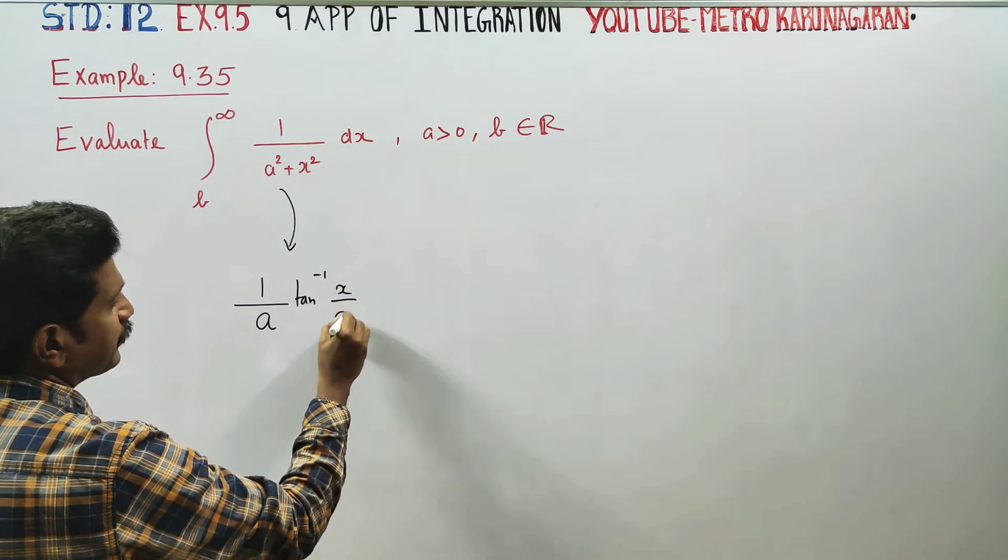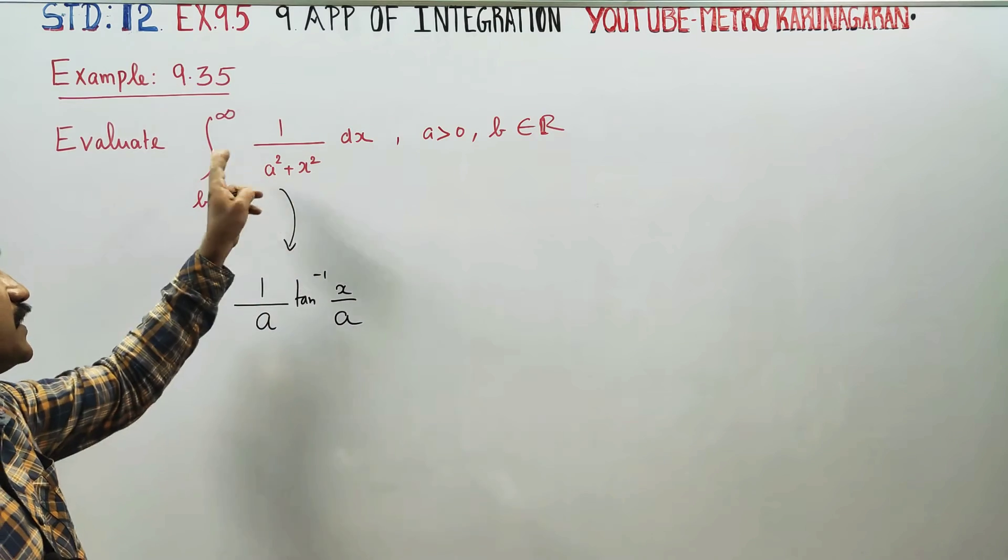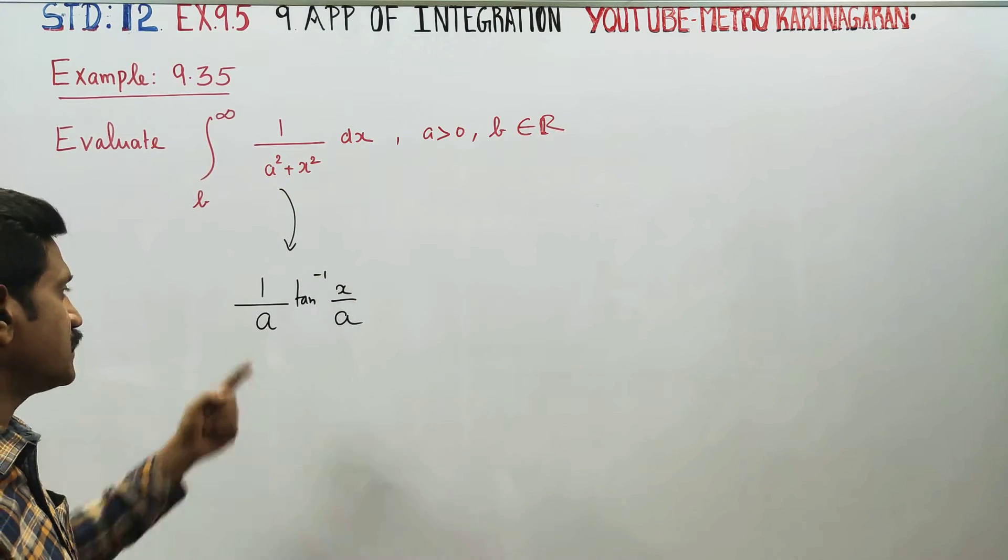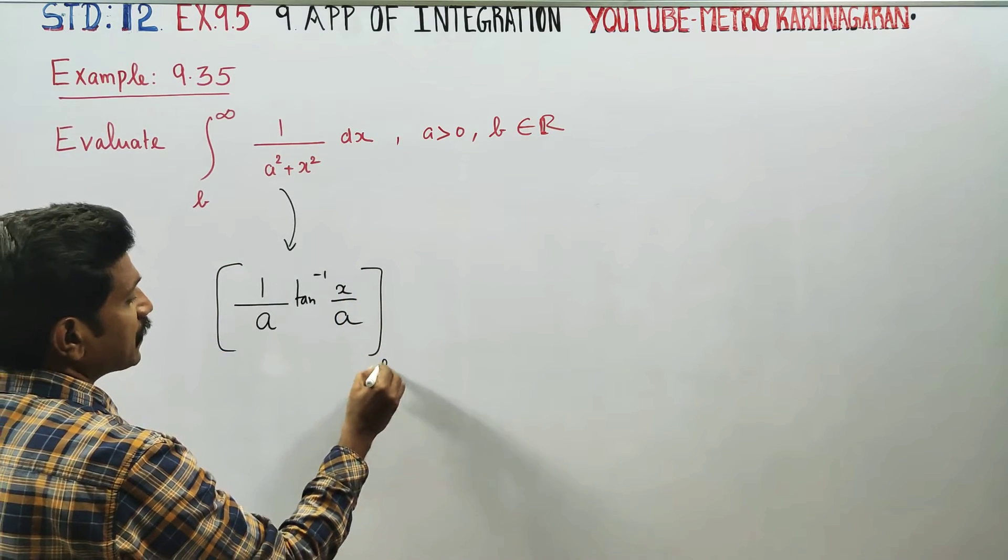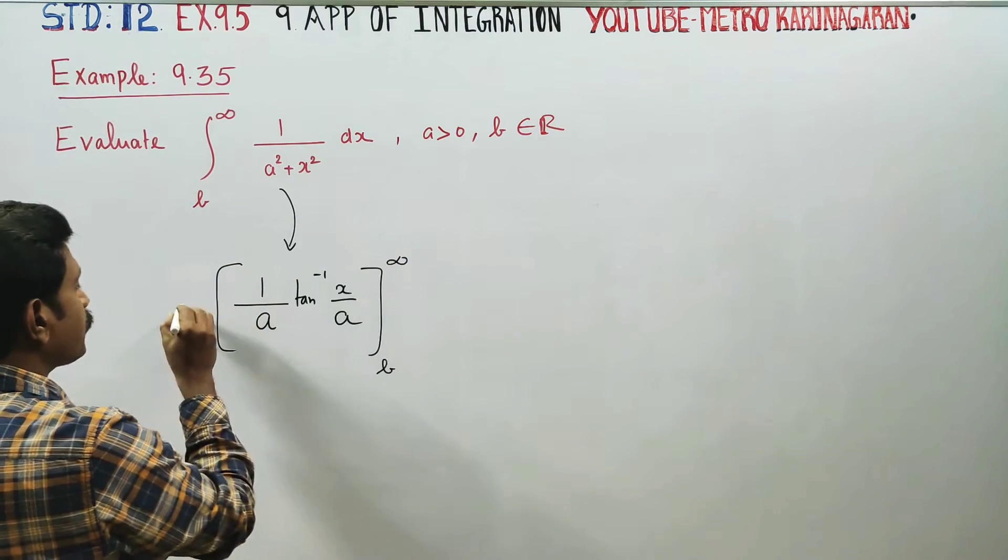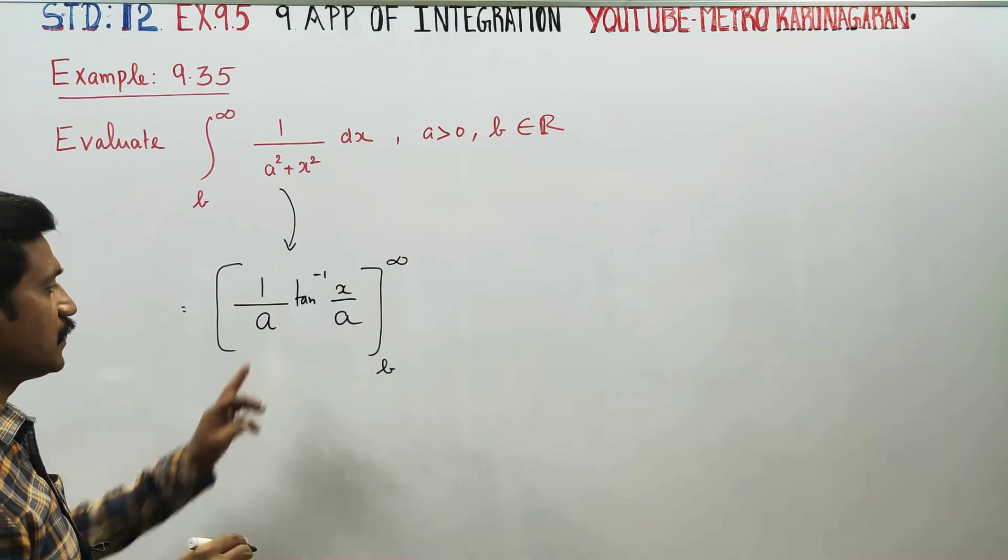This is a ready-made formula. Integration of 1/(a² + x²) is 1/a tan inverse of x/a. Now we apply the limits b to infinity.